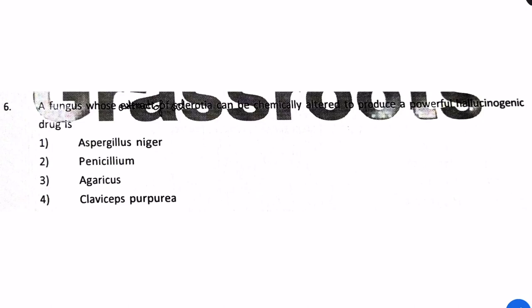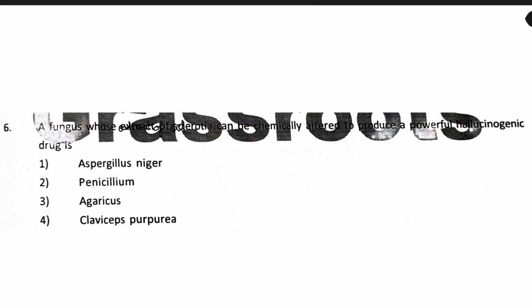We're going to solve pathology questions from BHU. The black grass roots text at the back is from a book called Grassroots. Our first question: a fungus was extracted from sclerotia and chemically altered to produce a powerful hallucinogenic drug. The options are: A) Aspergillus niger, B) Penicillium, C) Agaricus, and D) Claviceps purpurea.